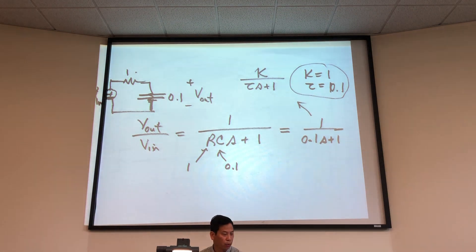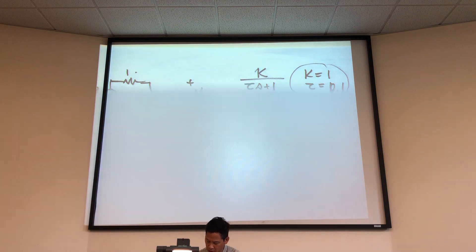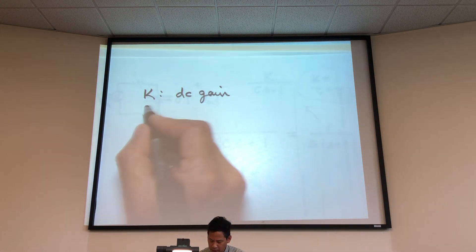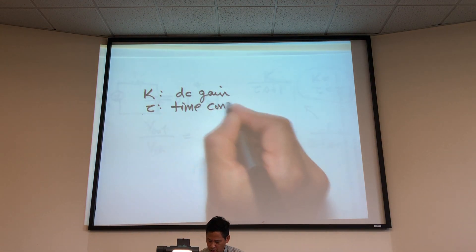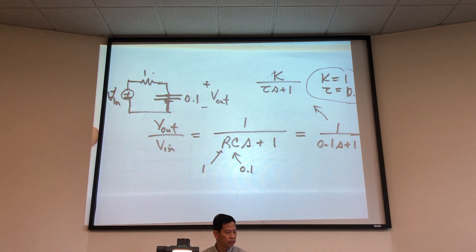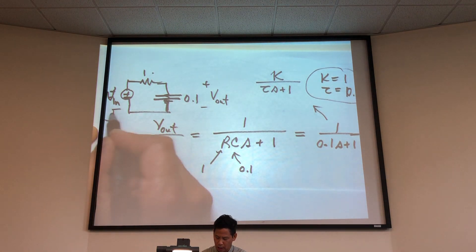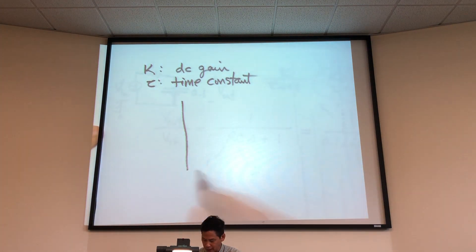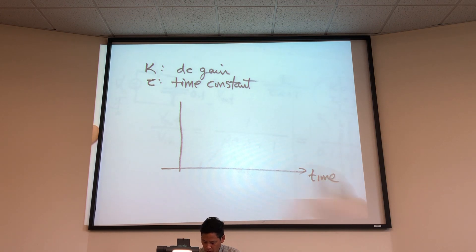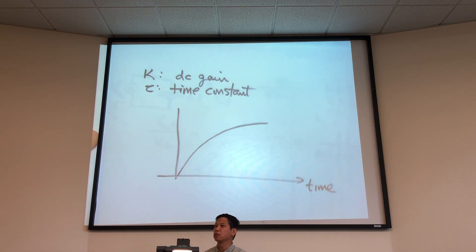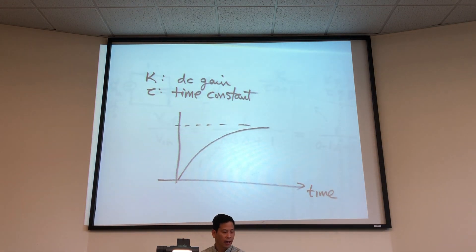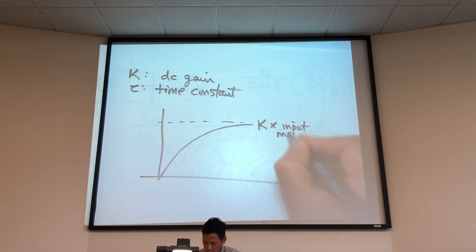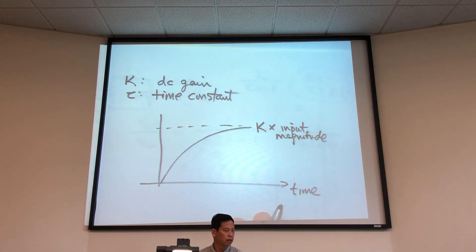We can use these two parameters to get a quick sketch of what the system response is. K is what we call the DC gain of the model, and τ is what we call the time constant. If the input voltage is a step — going from 0 volts to 1 volt at time t equals 0 — then the response is going to look like an exponential function, and its final value will settle out at K times the input magnitude. K is the DC gain, meaning it multiplies the magnitude of the input.